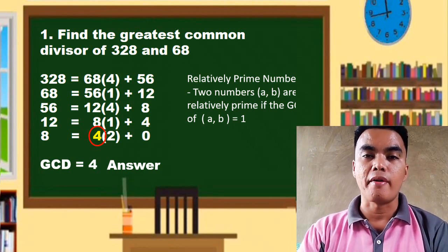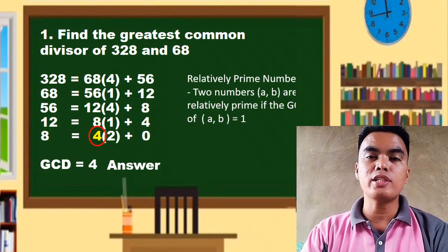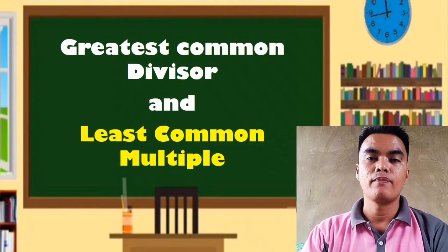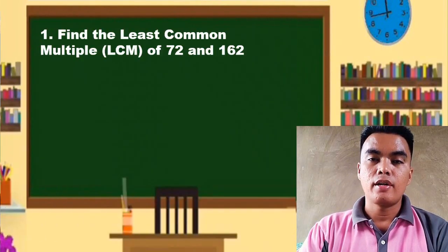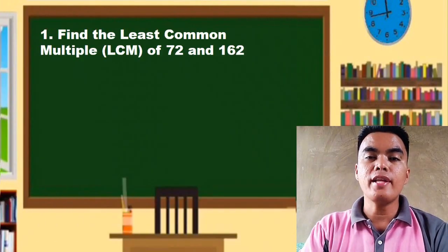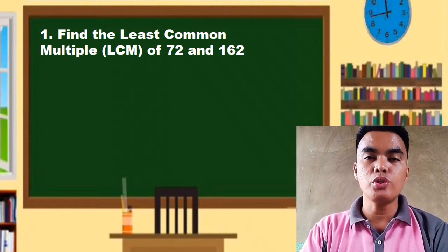Now let us go to the least common multiple of two numbers. Let us have an example. Example number two: find the LCM of 72 and 162. So to find the solution...